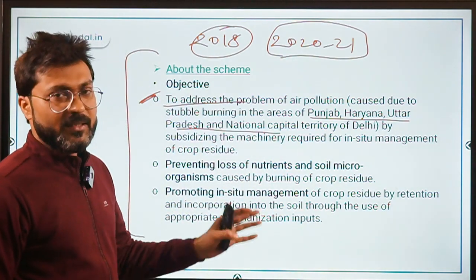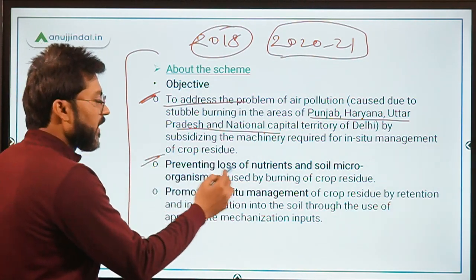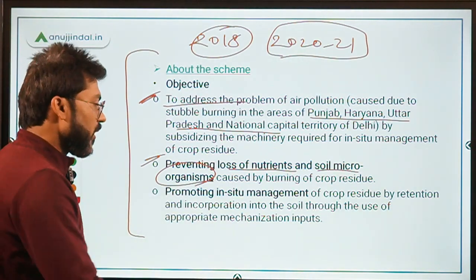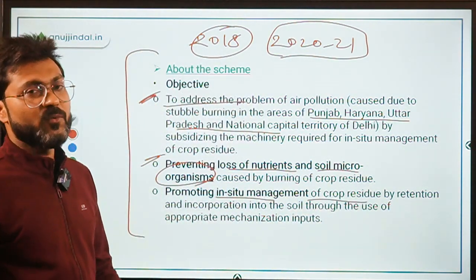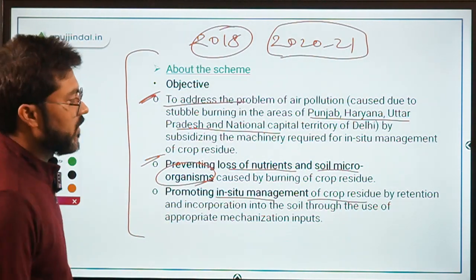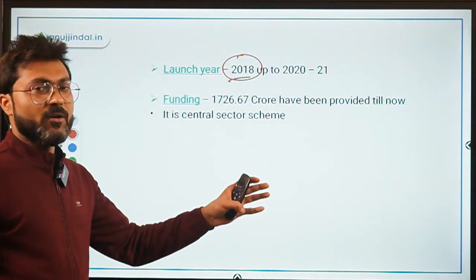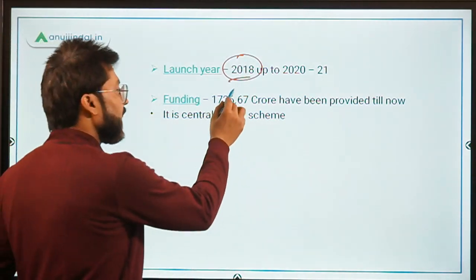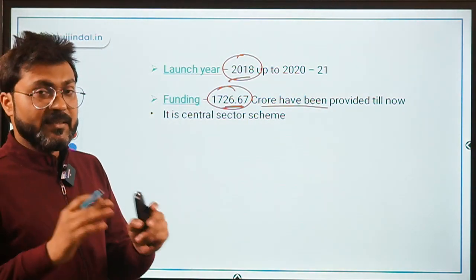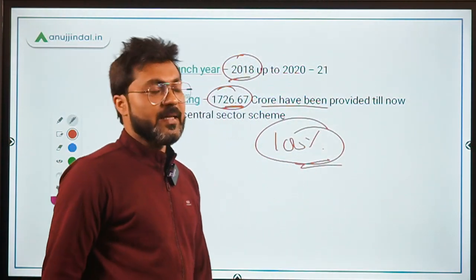This scheme was launched by the Ministry of Agriculture and Farmers Welfare. Its objectives also include preventing the loss of nutrients and soil microorganisms, and promoting in-situ management of crop residue to reduce the need for burning. It is a central sector scheme, meaning 100% funding comes from the central government. Till date, ₹1726.67 crore have been provided by the central government under this scheme.